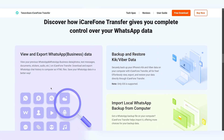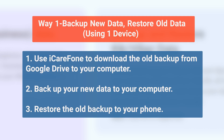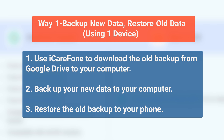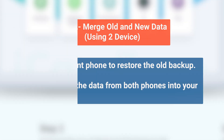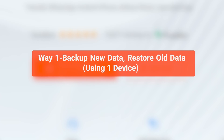I will provide two methods for you to choose from. If you're only working with one phone, you can use iCareFone to download the old backup from Google Drive to your computer and save your recent messages, then restore the old backup to your phone. This keeps your new and old data separate, but it won't let you merge them on one device. If you need to combine both, you can use a different phone to restore that old backup, then use iCareFone to combine all the data into your main phone. You can choose the part you want to watch. Let's start with the first one.